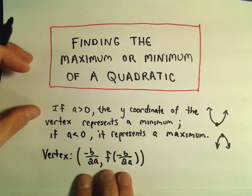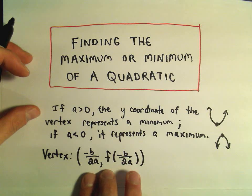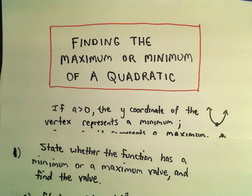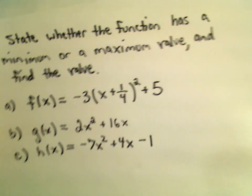and remember to find the vertex, we can use the formula negative b over 2a, f of negative b over 2a. So that's really all I'm going to do on these examples, is just use those two observations.